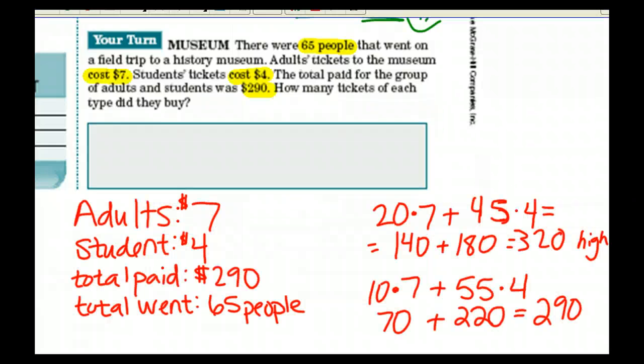I just highlighted some of the main parts and then I put the main parts down here. As you can see, I listed them: adults, students, total paid, and total that went. My first guess was that 20 adults went at $7 a piece and 45 students went at $4 a piece. I got $320, which was too high. I then guessed that only 10 adults went at $7 a piece and that 55 students went at $4 a piece, and I turned out to be right.